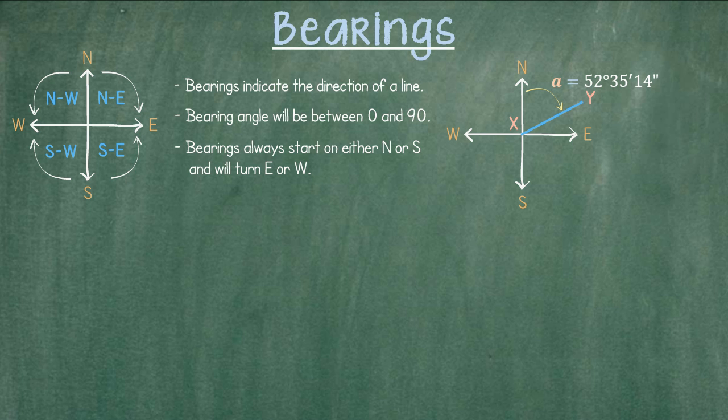First, we need to identify that our angle is on the north to east quadrant. Therefore, we would call out bearing XY as follows: North 52 degrees 35 minutes 14 seconds East.